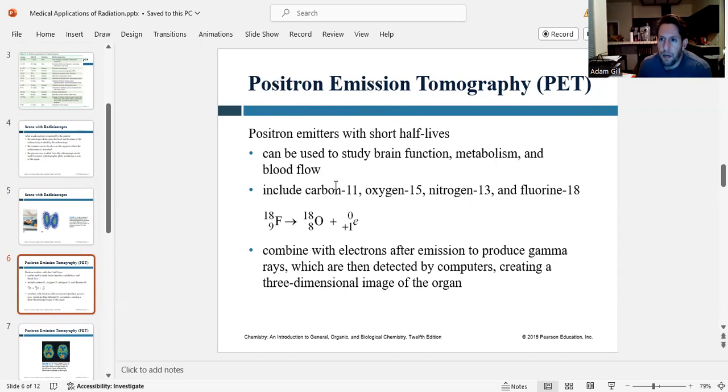Some of the common isotopes that we use are carbon-11, oxygen-15, nitrogen-13, and fluorine-18. So here's an example of fluorine-18 undergoing positron emission. So fluorine-18 emits a positron, and it gets converted into oxygen-18.